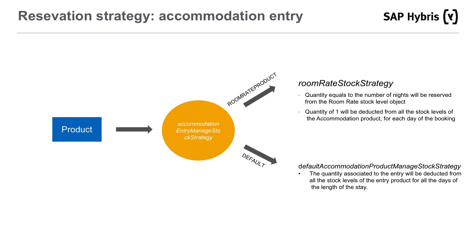Within an entry type there can also be different stock reservation strategies based on the product type. The strategy delegated to operate on entries of type accommodation is called AccommodationManageStockStrategy. Internally, this strategy uses a map called AccommodationEntryManageStockStrategy containing different strategies based on the product instance type in the current entry. This map currently contains two entries: RoomRateProductModel, linked to the RoomRateStockStrategy, which performs reservation for the room rate associated to the current entry and accommodation products from the current accommodation order entry group. A quantity equal to the number of nights will be reserved from the room rate stock level object, and a quantity of 1 will be deducted from all stock levels of the accommodation product for each day of the booking.